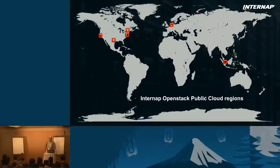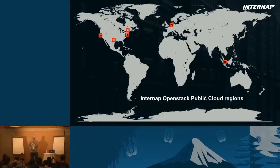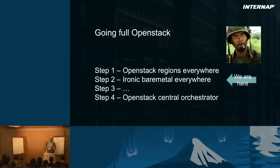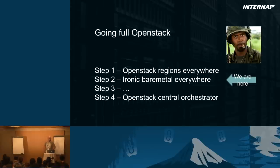Internap is a public cloud service provider. We have regions around the world that already run OpenStack and have been for a couple of years. These regions are classic OpenStack deployments, and Internap is basically trying to use OpenStack not only for public cloud but for the complete orchestration of the data center — going full OpenStack. The first step is to have OpenStack regions in all the data centers.